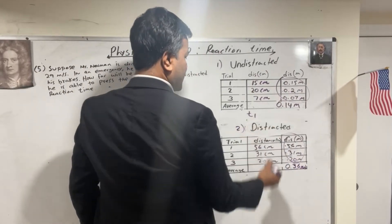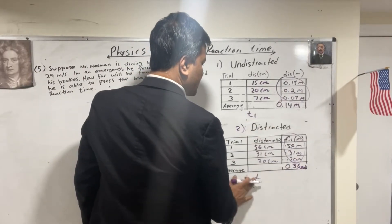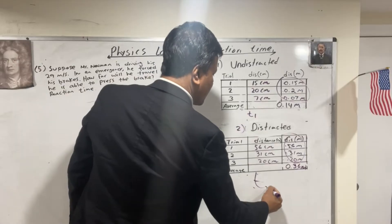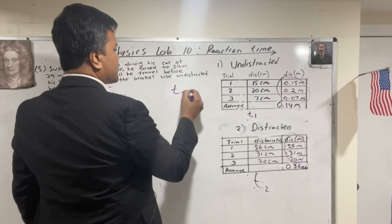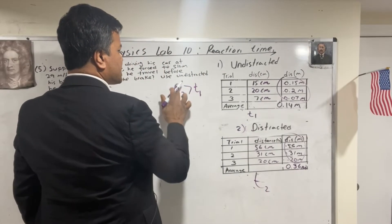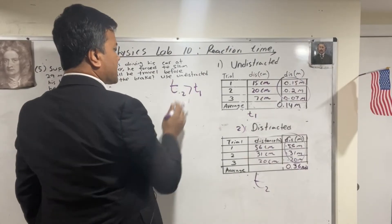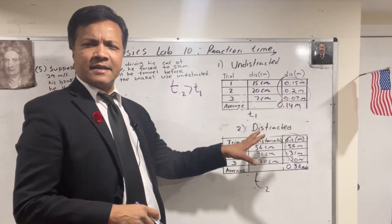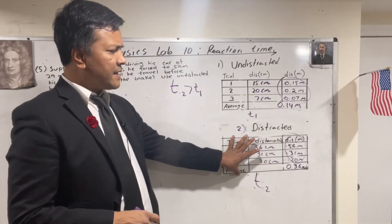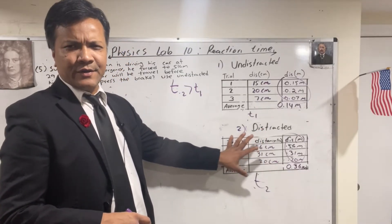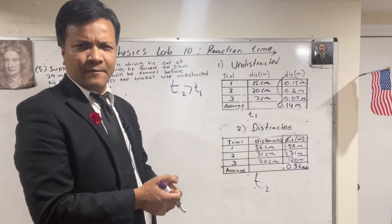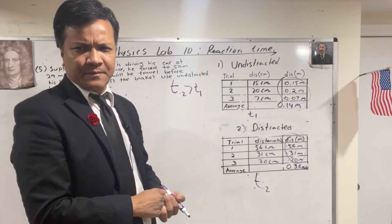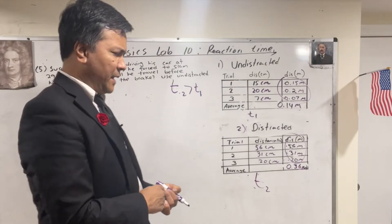We want to find T1 and we want to find T2. Of course, T2 would be bigger than T1 because the person was distracted during the T2 because he was using cell phone and trying to catch the ruler at the same time.